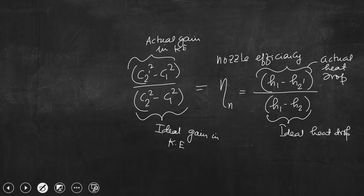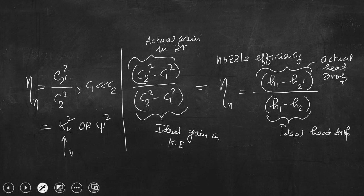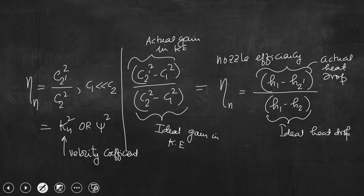The nozzle efficiency can also be written - considering that C1 is much much less than C2 - as essentially the velocity coefficient kn squared, or psi squared, where kn or psi is the velocity coefficient for the nozzle. The value of this coefficient varies from 0.93 to 0.97 depending on the properties of the internal surface of the nozzle.